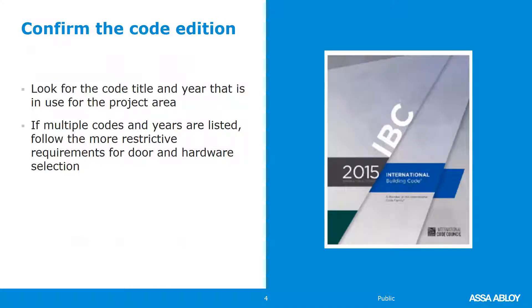The building code is adopted into law either by your city, state, or jurisdiction. The life safety plan should list the code title and the year applicable for the project. You may have multiple codes listed, especially if it's healthcare — a lot of times in hospital work you'll have more than one code, including NFPA 101. If you have more than one code, you have to follow the more restrictive requirements when it comes to selecting doors, hardware, and their applicable requirements.